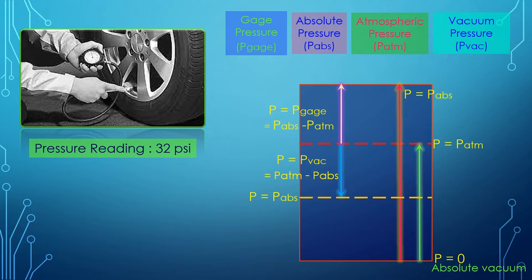So in the air pressure reading of a tire, 32 psi is actually the gauge pressure. If the atmospheric pressure is 14.3 psi, then the absolute pressure is 46.3 psi.